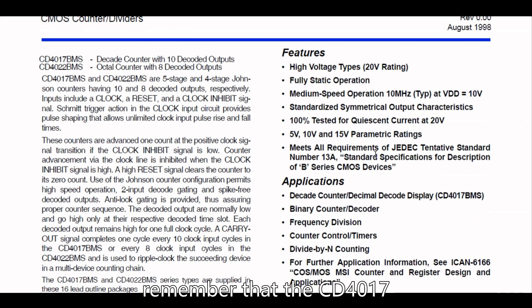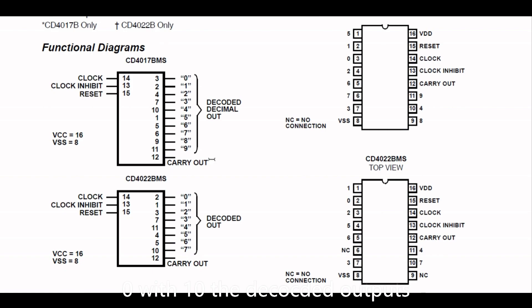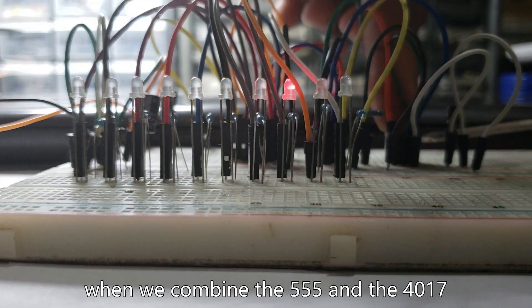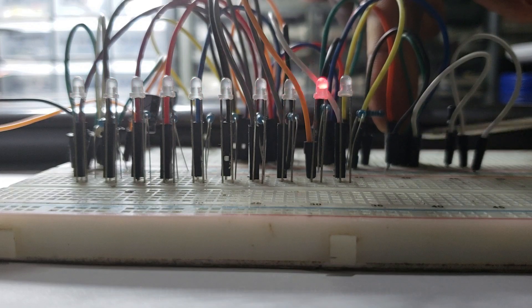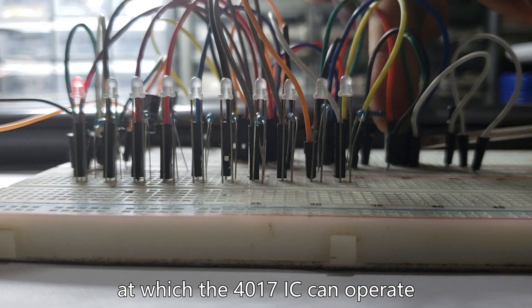Remember that the CD4017 is a decade counter, counting from 0 to 10 with decoded outputs. When we combine the 555 and the 4017, the output of the 555 controls the rate at which the 4017 IC can operate.